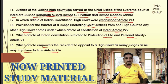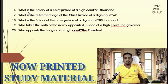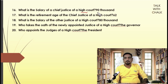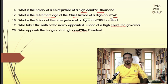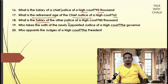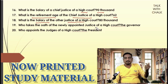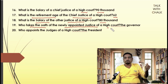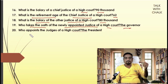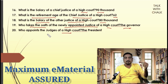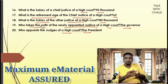Question 16: What is the salary of the Chief Justice of a High Court? It is ₹2.5 lakh. The retirement age of the High Court Chief Justice is 62 years. The salary of other judges of the High Court is ₹2.25 lakh (eighty thousand in old scale). The oath to newly appointed High Court judges is administered by the Governor. The President appoints High Court judges.